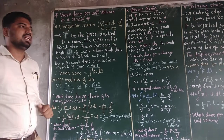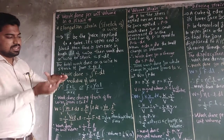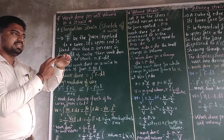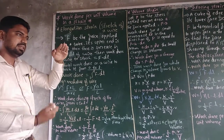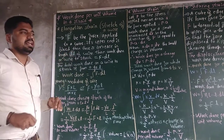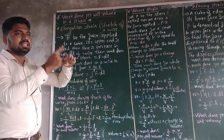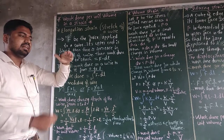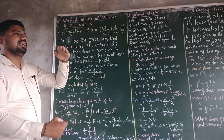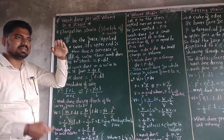Elongation strain: Take one wire whose upper end is fixed and lower end is free. When you apply an external force to that wire, there is no change at the upper end because it is fixed. Only the lower end changes, meaning the length of the wire increases when you apply an external force.